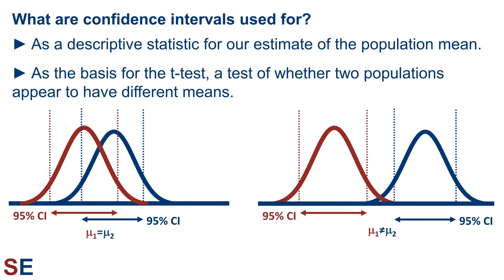So what are confidence intervals used for? First, they're used as a descriptive statistic for our estimate of the population mean. Second, the concept of confidence intervals is used as the basis for the t-test, which is a test of whether two populations appear to have different means from one another. We can't just compare the means of our samples, because sampling error would cause them to be different even if the populations had the exact same mean. We need a more sophisticated method of comparing our samples, and that method is called the t-test.